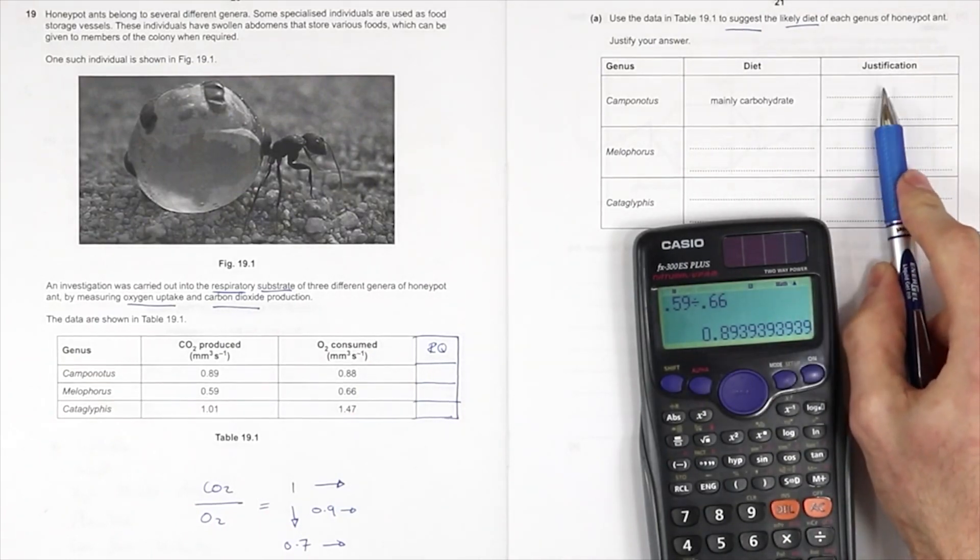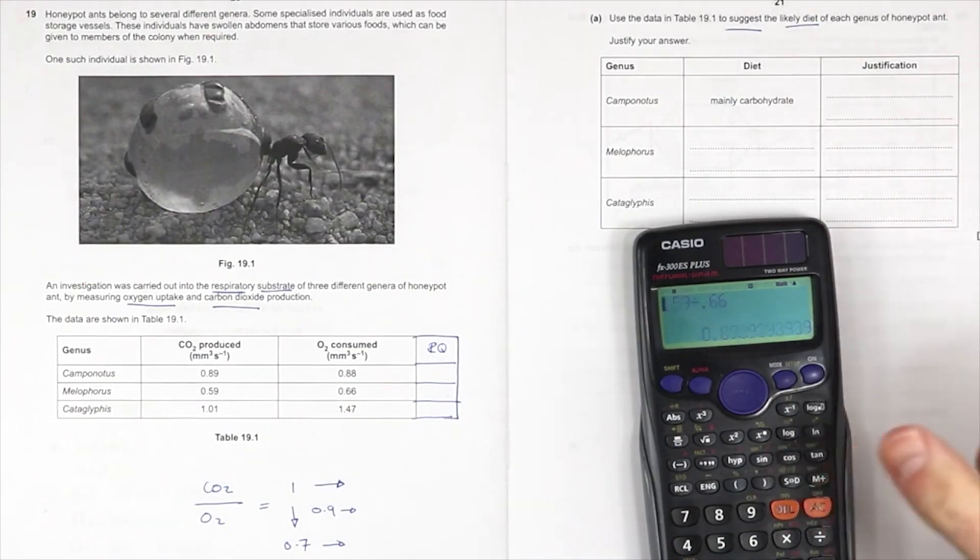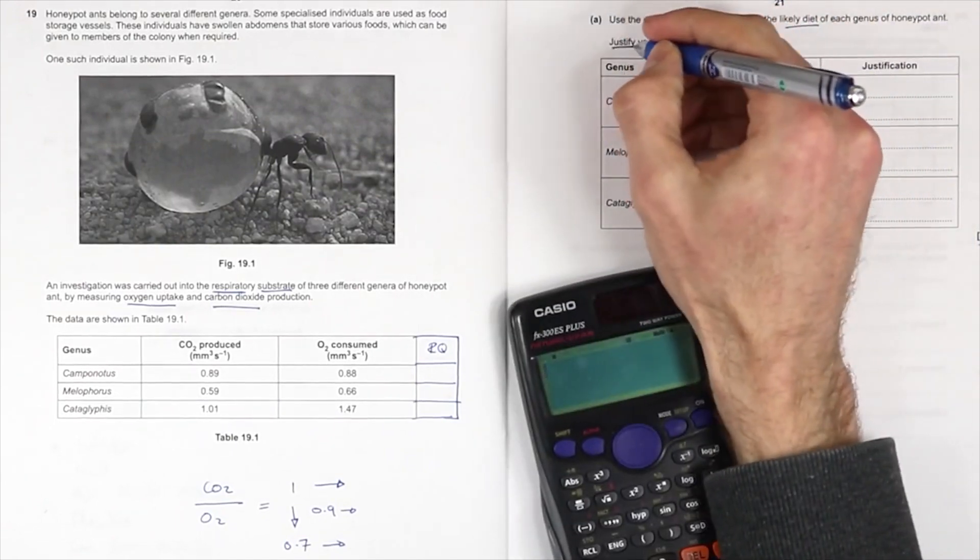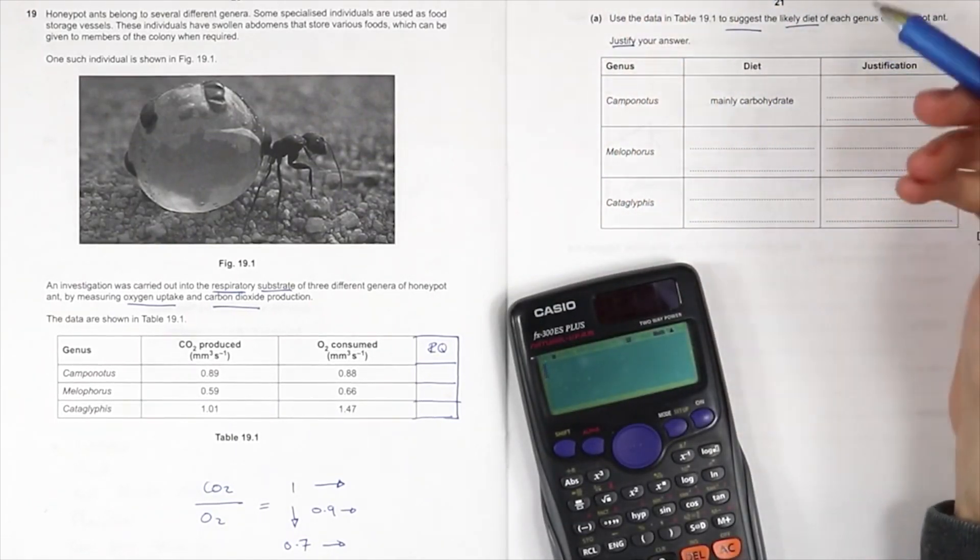So the justification is that the RQ is 1 here, and then you're going to have to know the others. If you don't know it, then you'll have to go back to the ultimate guide, watch the lesson, figure it out, and you've got four boxes to fill in. You're going to get one per row because there's three marks here. The justification is a mark, and what the diet is, is the other thing.